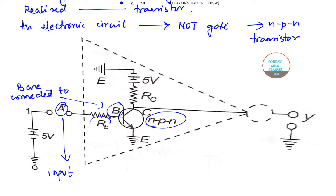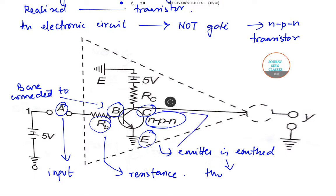The emitter E is actually earthed. The collector is actually earthed through the resistance RC.